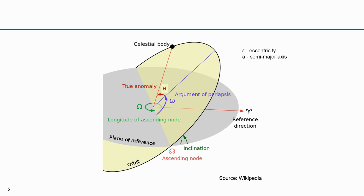Here's a review of the orbital elements. An orbit starts with a semi-major axis, which is essentially the size of the orbit, and an eccentricity, which is the shape of the orbit. An orbital ellipse can rotate along the argument of periapsis. The plane can be tilted along an angle of inclination, and then the tilted, rotated ellipse can be twisted in the equatorial plane along the longitude of the ascending node.